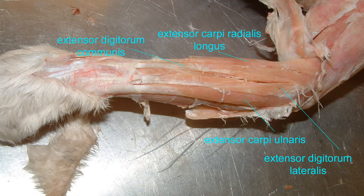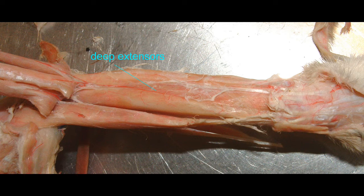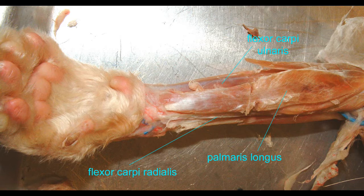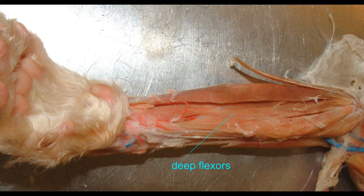In muscles, often some muscles lie over others. For example, in the forearm, one could look at the superficial muscles, and then after cutting those and reflecting them backwards, see the deeper muscles underneath them.